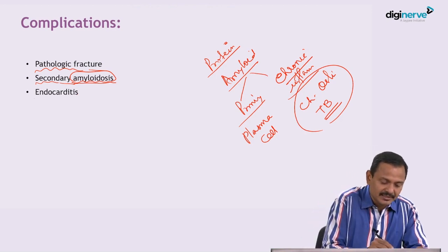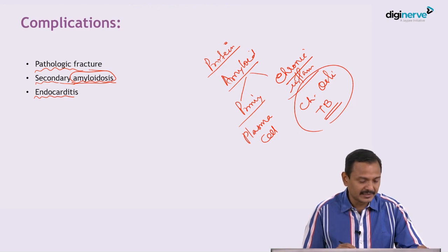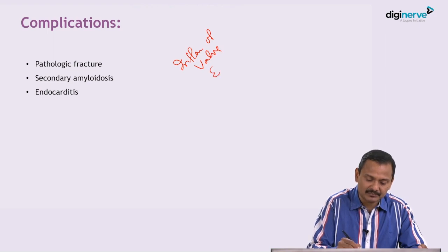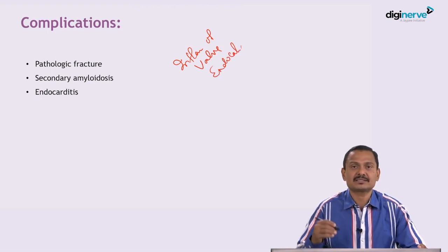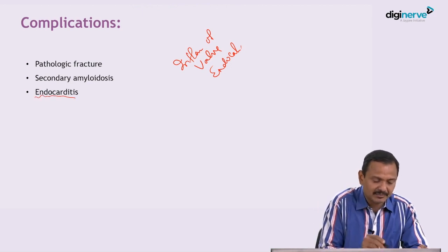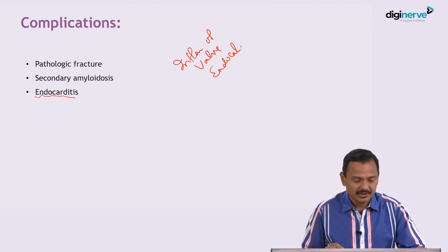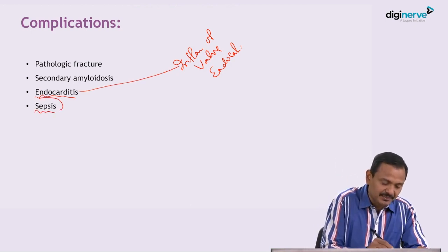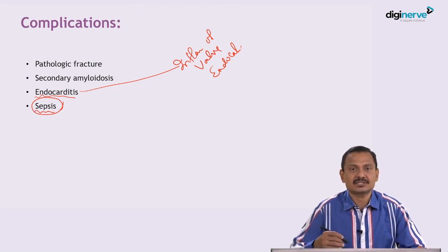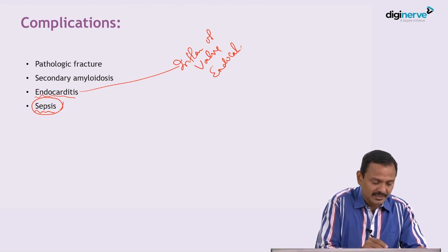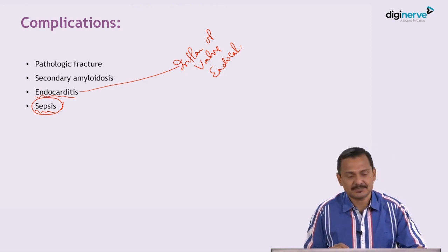The third complication is endocarditis — inflammation of the valve or endocardium. Because osteomyelitis from the bone will go to the blood and circulate, it can damage the valve and endocardium causing endocarditis. Fourth is sepsis, where the infection can evolve from one organ and involve multiple organs.